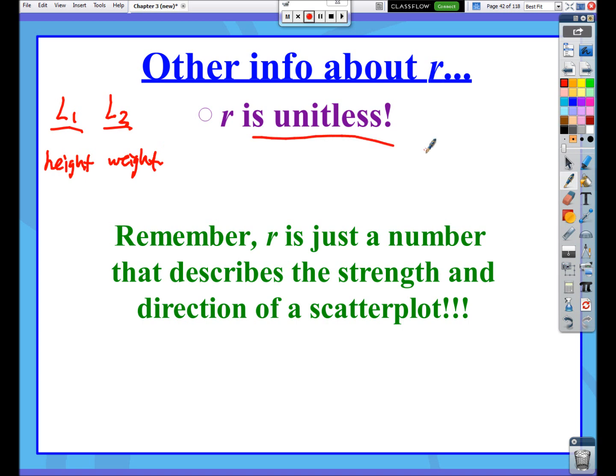Your calculator doesn't know what the two variables in your two lists represent. So when it gives you a number, like that 0.9986, the correlation you would just say is 0.9986. That's it. There's no units to go with that.